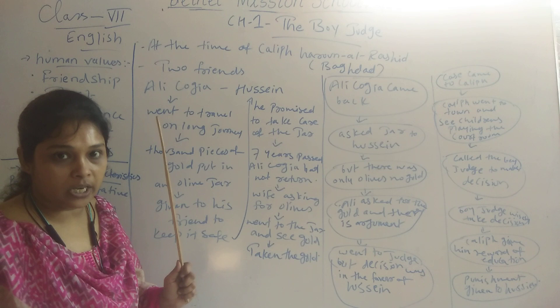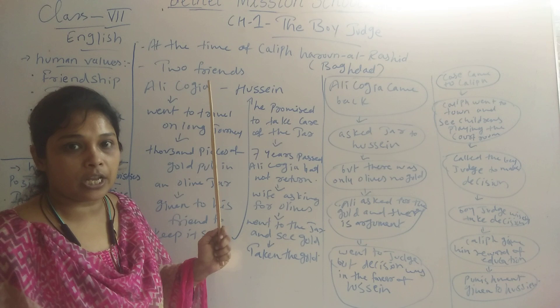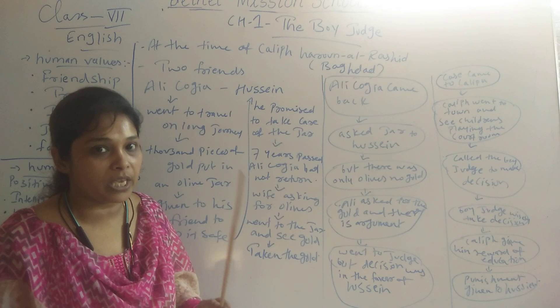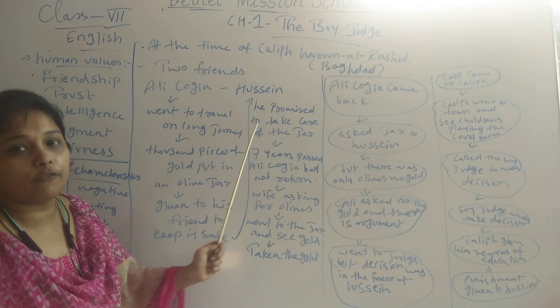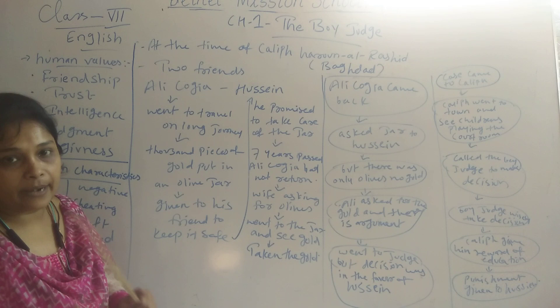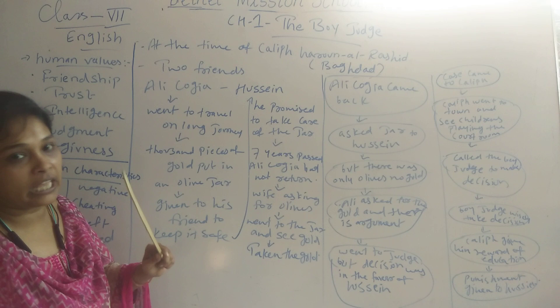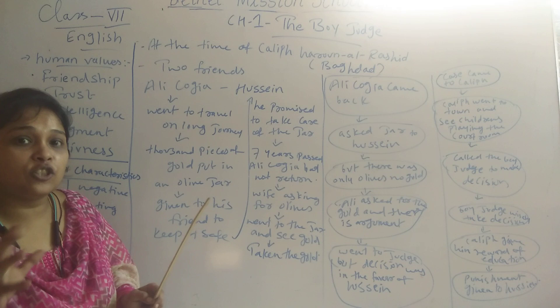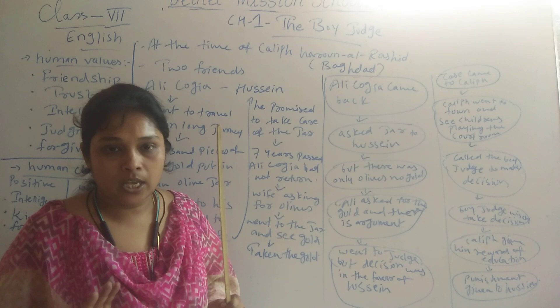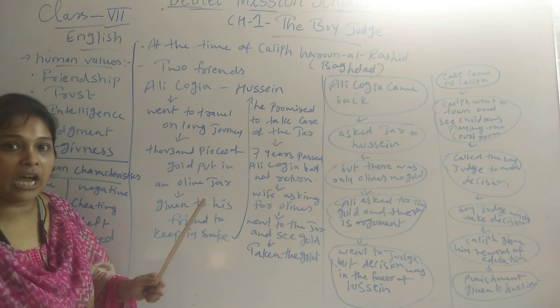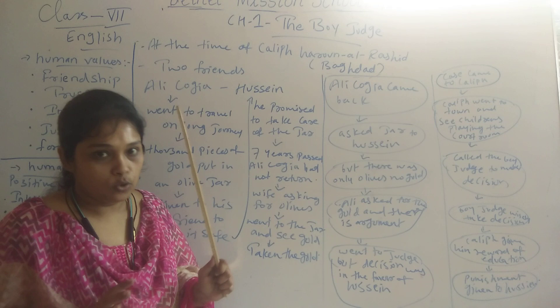Ali said to Husayn: I am going on a long journey; please keep this jar of olives, and when I come back, give it back to me — I want you to keep it safe. Husayn promised to take care of that jar. Husayn did not know that the jar contained a thousand pieces of gold; he only knew it as an olive jar. Ali had placed the gold inside and covered it with olives so it would look like a regular olive jar. Husayn kept the jar, and Ali Khojiya went on the long journey.